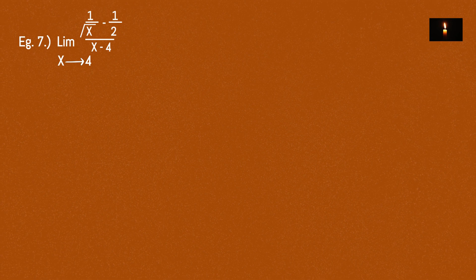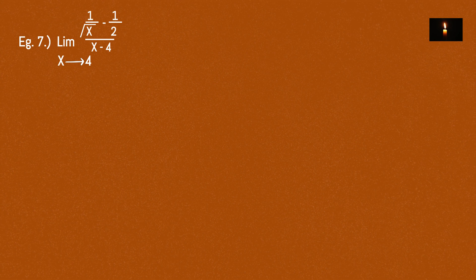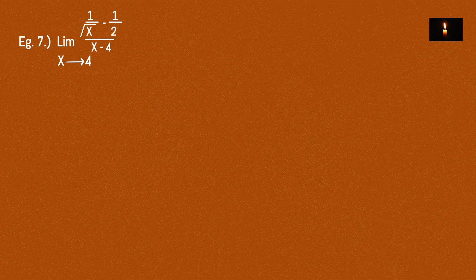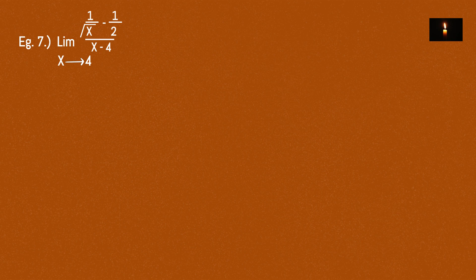If we rationalize, root 2 is pulled out. Let's see — root 2 is here, so we can multiply by root 2. Root x and 2.